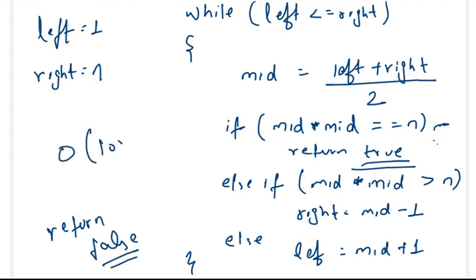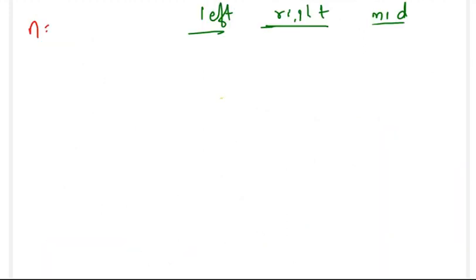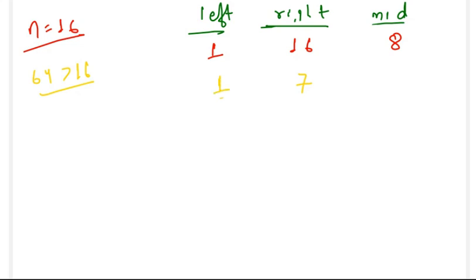This approach works in O(log n) complexity. For example, with n equals 16: left is 1, right is 16, mid is 8. Since 8 squared (64) is greater than 16, right becomes 7. Now left is 1, mid is 4. Since 4 squared is 16, which equals n, we return true.